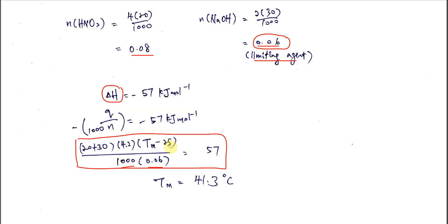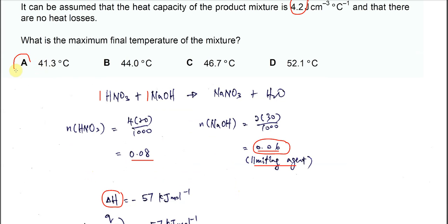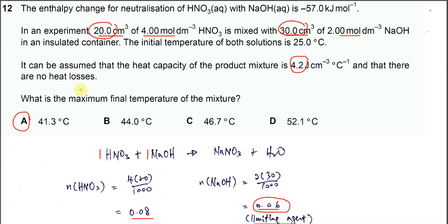Okay, so after that when you get this part, you rearrange, okay, you get the maximum temperature is 41.3 degrees C, which is A. So that's all for this part, thank you.